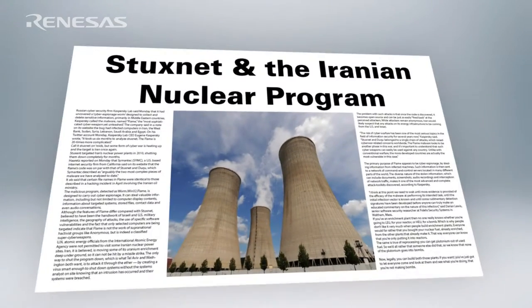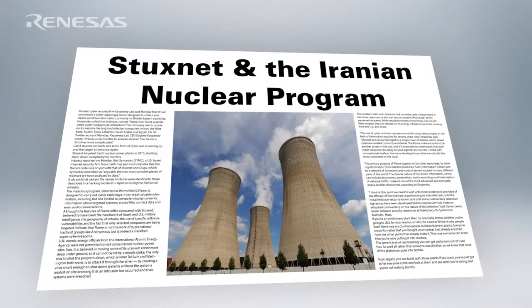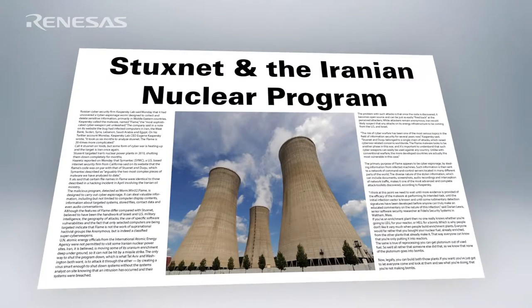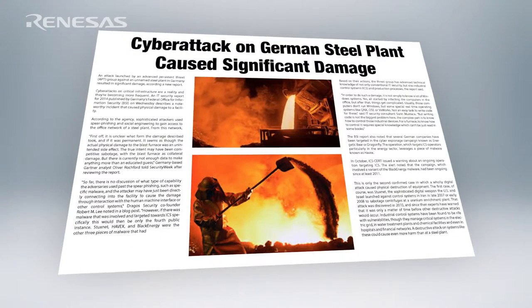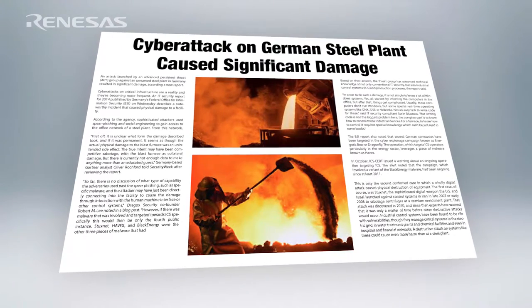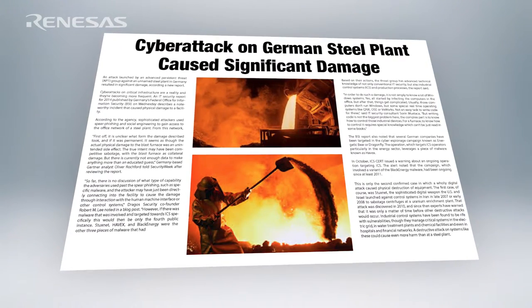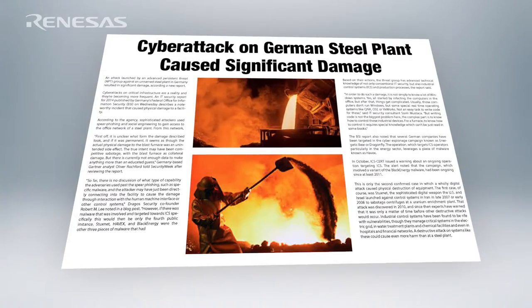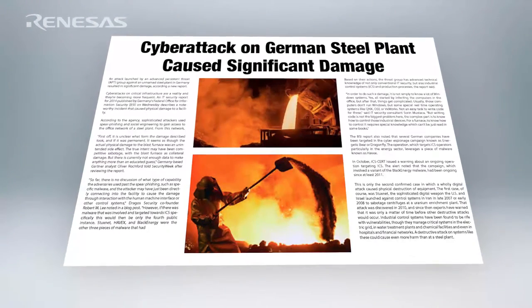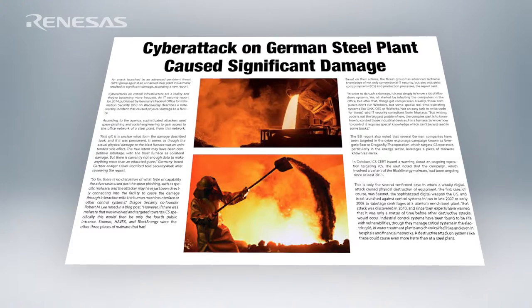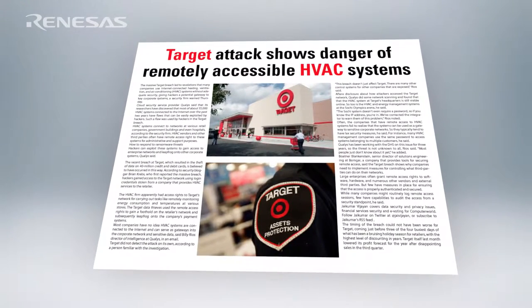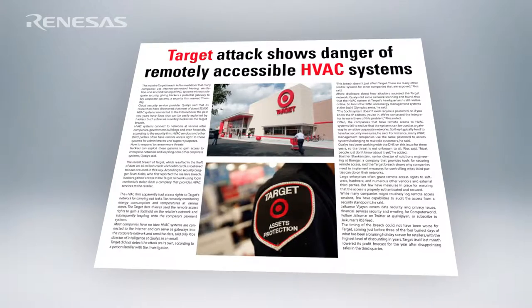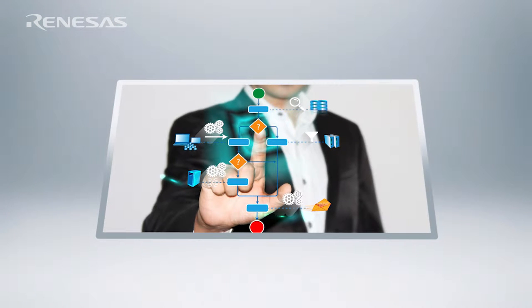The Stuxnet virus worked by propagating information across the network and across USB sticks. The German steel mill that was attacked was as a result of hackers coming in through the corporate network and then being able to move unilaterally throughout the control network or the operational network without any defenses in place. And of course, in the Target data breach, once hackers were inside the network, they were able to communicate with the embedded devices with impunity.